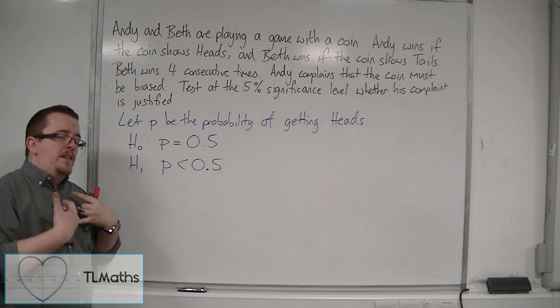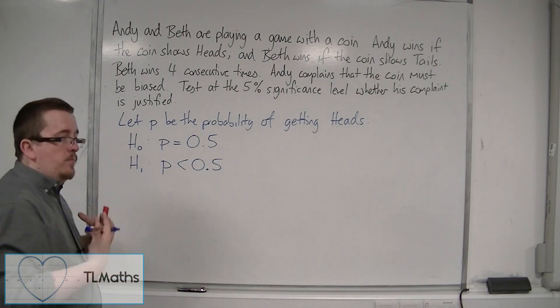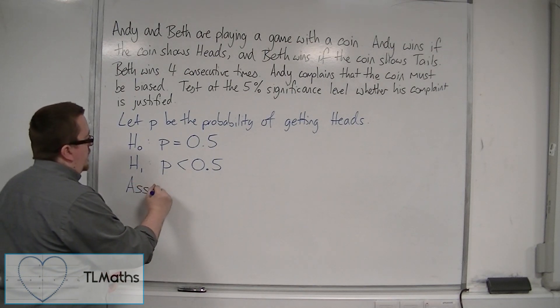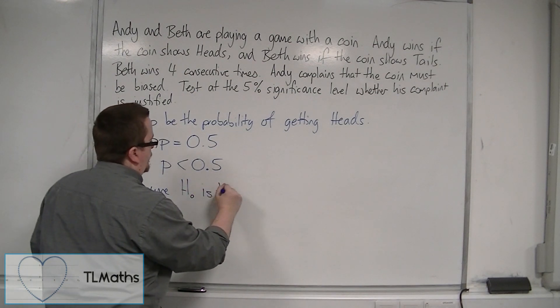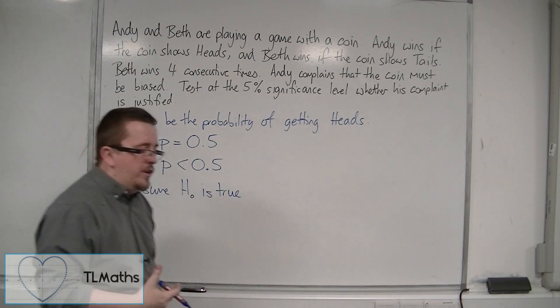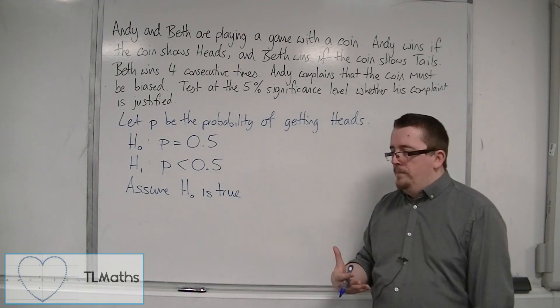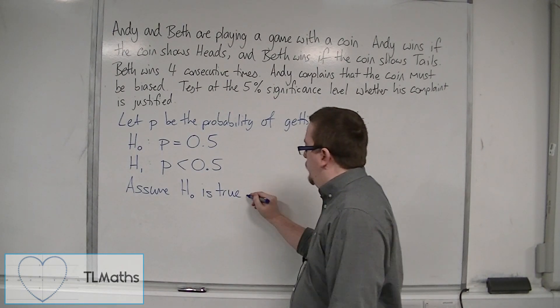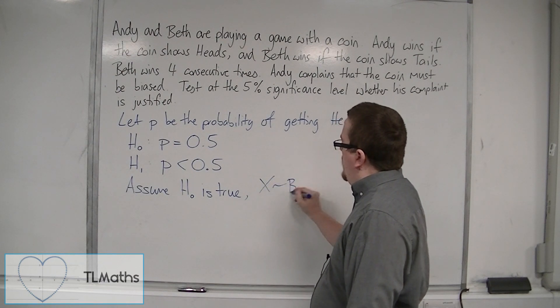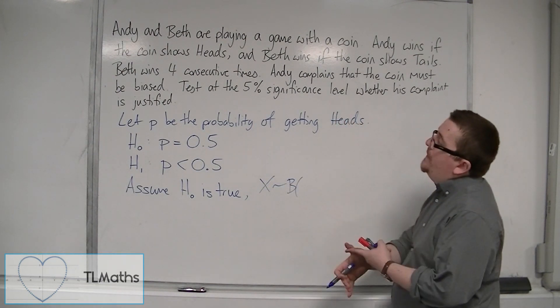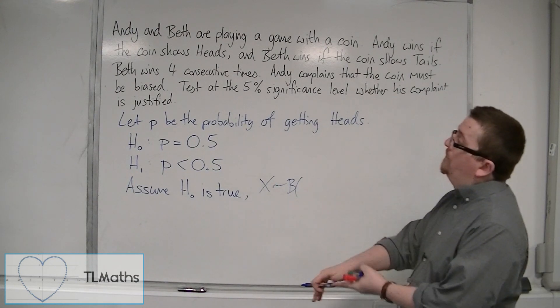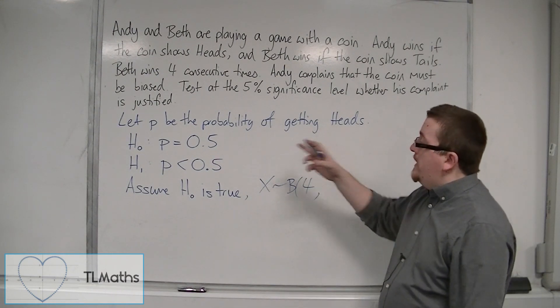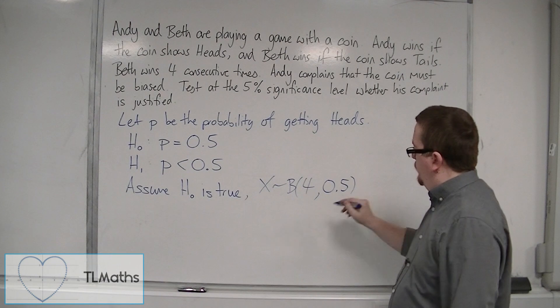So we then need to conduct the actual test. That sets up the problem. So what we then say is, assuming H0 is true, we're going to look at it from H0's point of view and assume that it's true, and set up a binomial distribution based on this. So we're going to let X be binomially distributed with an N of four trials, and the probability of P, 0.5.